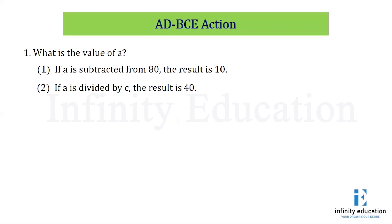There is a question: what is the value of A? Statement 1 is saying, if A is subtracted from 80, the result is 10. If I convert this statement into an equation, that is 80 minus A equals 10. If we try to solve this, we know this is sufficient, because this is a linear equation with only one variable. Hence, it is sufficient.